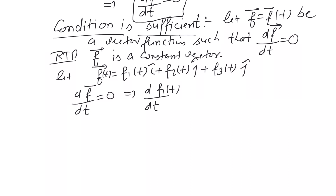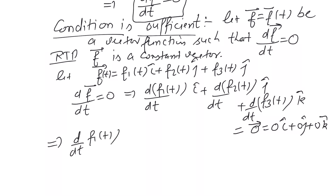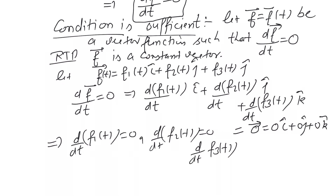Since df/dt = 0 vector, and the zero vector is 0î + 0ĵ + 0k̂, comparing the coefficients of î, ĵ, k̂ on both sides we get: d/dt of f₁(t) = 0, d/dt of f₂(t) = 0, and d/dt of f₃(t) = 0.